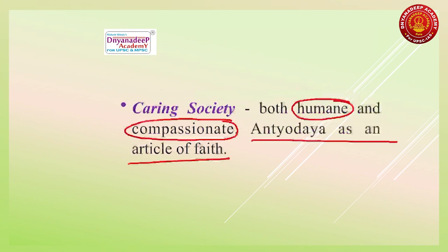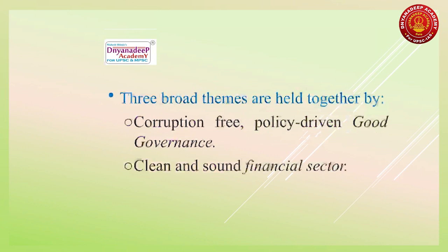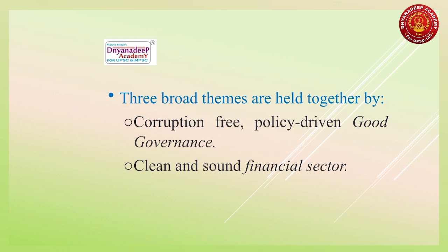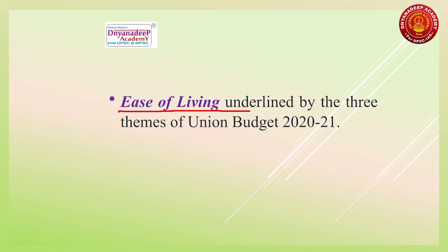These three broad themes are held together by three 'glues': first, corruption-free policy-driven good governance; second, a clean and sound financial sector; and third, ease of living. These three glues underline the Union Budget 2020-21. The purpose of these highlights is to make you aware of how you could get questions on these themes.